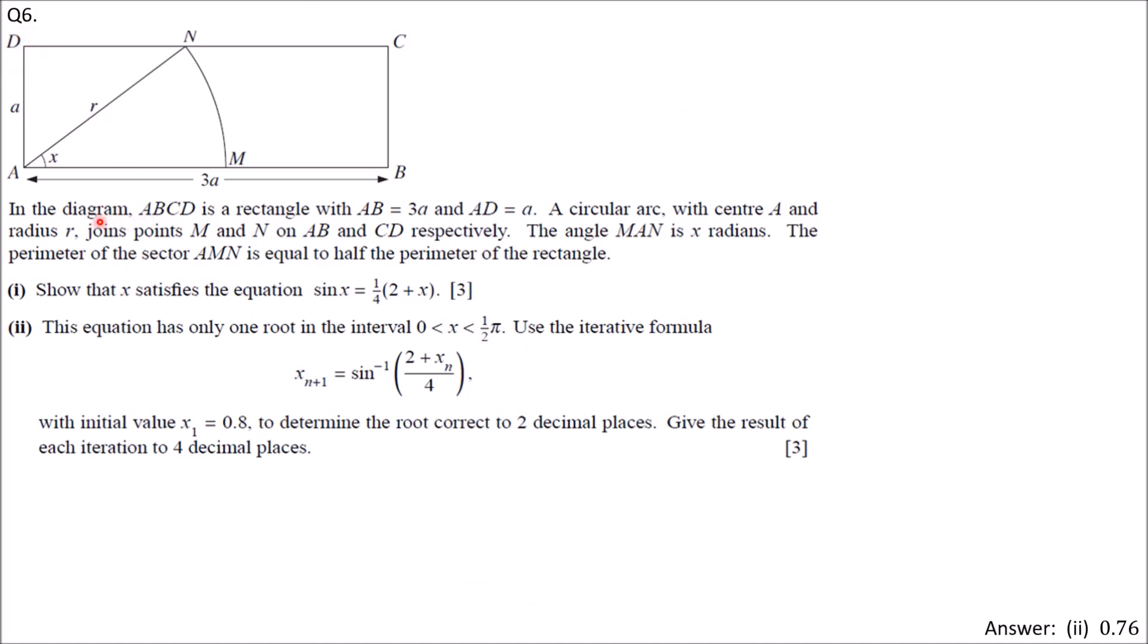Question 6. In the diagram, ABCD is a rectangle with AB equals 3A and AD equals A. A circular arc with center A and radius R joins points M and N on AB and CD. The angle MAN is X radians. Given the perimeter of sector AMN equals half the perimeter of the rectangle, show this equation.